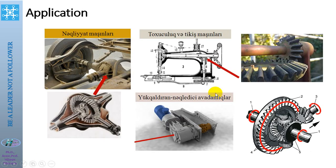Applications of bevel gear boxes may be found on some machines: transporting machines, technological machines, lifting and transfer transporting machines — wherever the shafts' axes intersect.